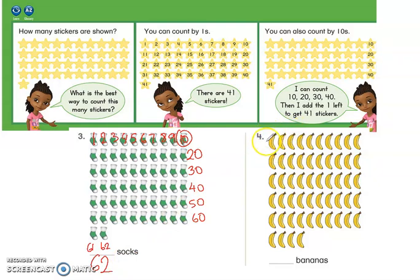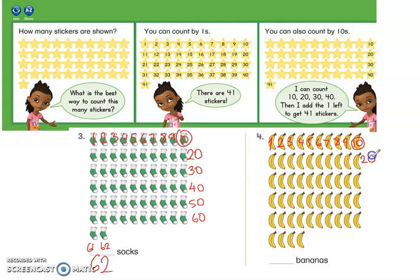Now let's go to the next one. I want you to pause the video and try it on your own. Let's start by checking if we have ten in one row: one, two, three, four, five, six, seven, eight, nine, ten. So it will be ten, twenty, thirty, forty, fifty, and then fifty-one, fifty-two, fifty-three, fifty-four. The total is fifty-four bananas.